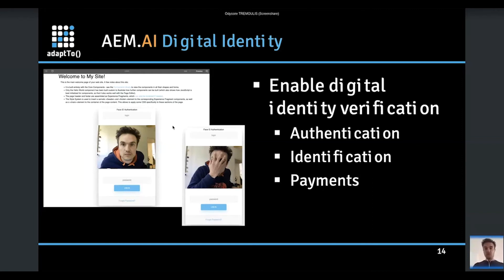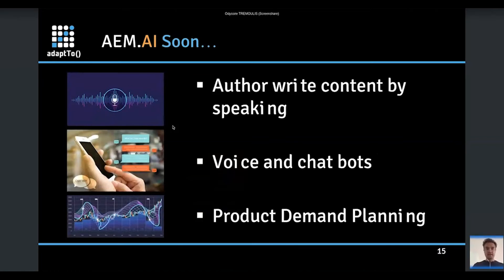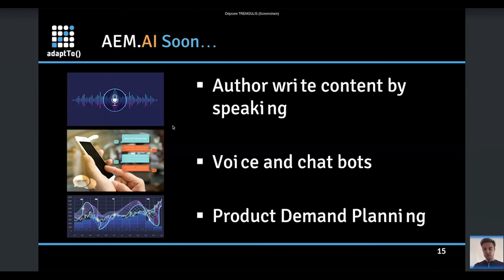AEM.AI compares the image from the camera with the image on the person's profile. This can be used for authentication — you can use it to authenticate on your website, on AEM, to identify someone, or even to make payments. If you have an e-commerce website and want to authenticate payments, instead of asking for a credit card you can ask for face ID recognition, just by plugging AEM with AWS services.